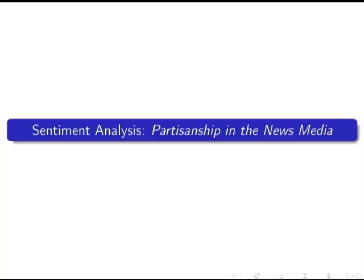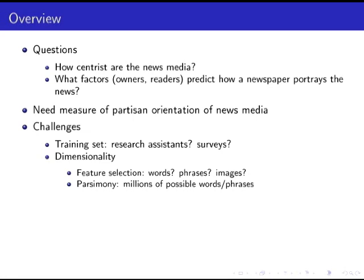Partisanship in the news media: there are a bunch of social science questions — how centrist are the news media? Are they to the left or right of the typical American? What are the economic factors — is it the preferences of owners like Rupert Murdoch, or the preferences of consumers like Fox News viewers, that determine how Fox News spins the news? These are fundamentally questions about the causal structure of a variable of interest. The problem is taking Fox News and turning it into a single-dimensional index on a left-right spectrum. We need to take all the different phrases in Fox News or the Wall Street Journal and turn that into a number we know how to do social science with. Two issues come up: how to construct our training set, and how to address dimensionality.